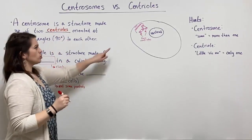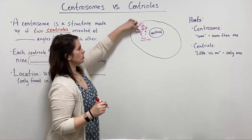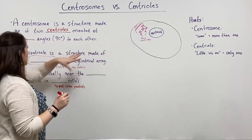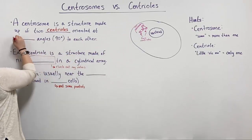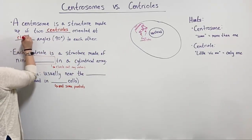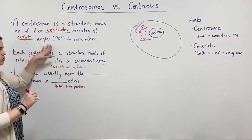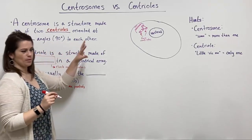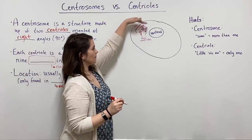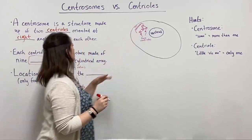The two centrioles are oriented at right angles to each other — that's 90 degrees, so they're basically perpendicular.